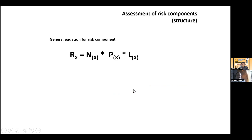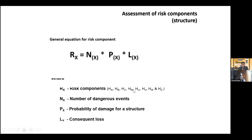What is the general equation for the risk component? A risk R is a multiplication of N × P × L. N is the number of dangerous events, P is the probability of damage for a structure, and L is the consequent loss. The risk components are many: RA, RB, RC, RM, RU, RV, RW, RZ. I am not going to bore you with all the explanations because risk assessment itself is a big subject of three to four hours, involving more than 150 equations. At the relevant point I will tell what RA, RB, and RC are.